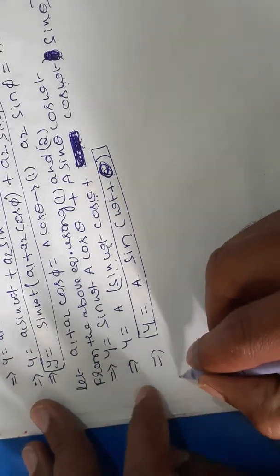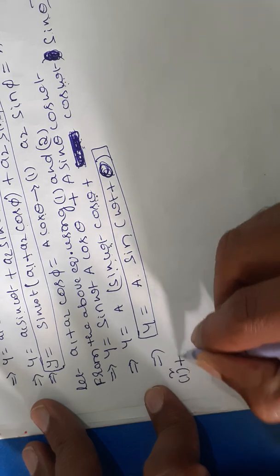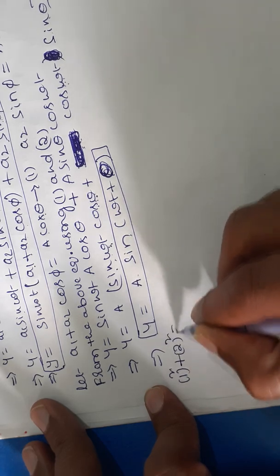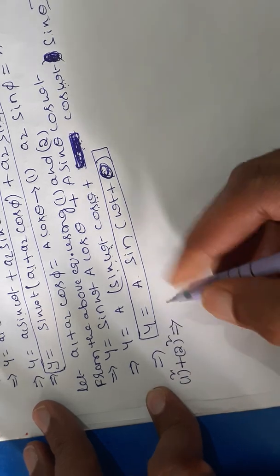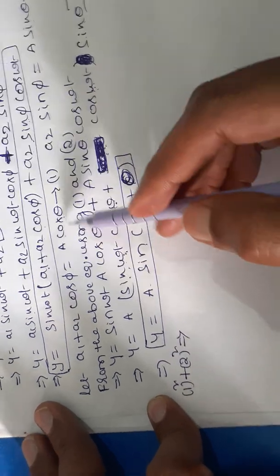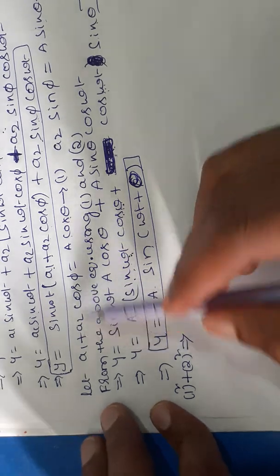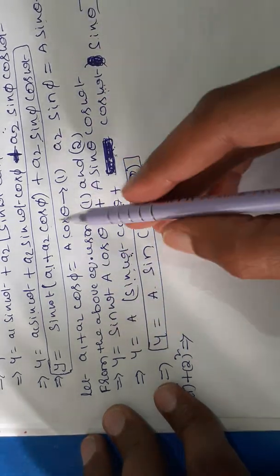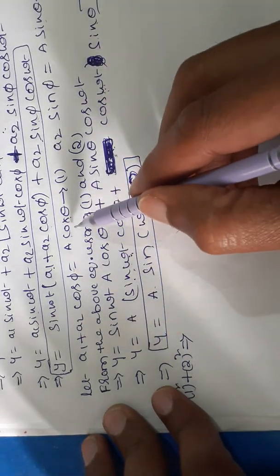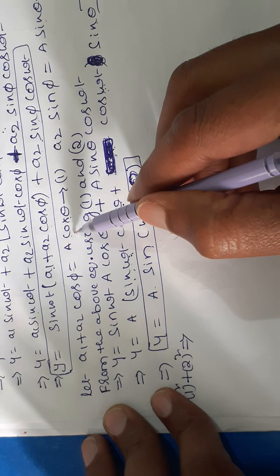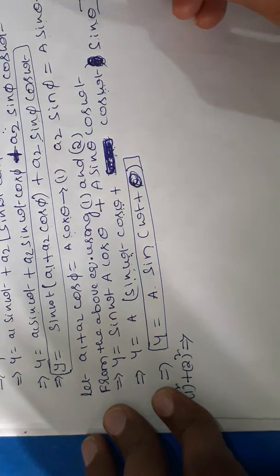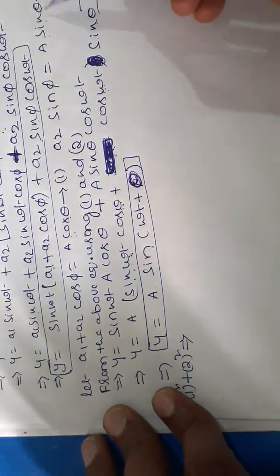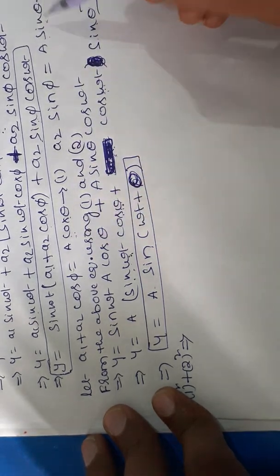Now, squaring and adding Equations 1 and 2: on the right side we have A·cos θ and A·sin θ.